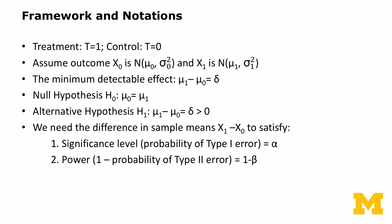The minimum detectable effect is the difference in the two means: μ₁ minus μ₀, and we use the Greek letter delta (δ) for this difference. The null hypothesis is that there's no effect — reducing class size doesn't change learning outcomes, so μ₀ = μ₁. The alternative hypothesis is that there is an effect: μ₁ − μ₀ = δ, which is positive.